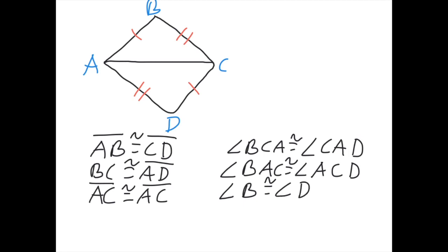Now, we want to write the statement that these two triangles are congruent. Remember again, order matters. The first one will be triangle ABC. So, triangle ABC is congruent to — the order of the other one has to be correct. Looking at this picture, we have ABC.